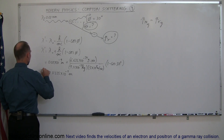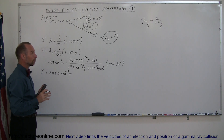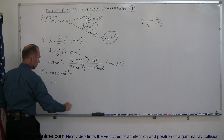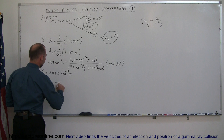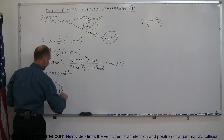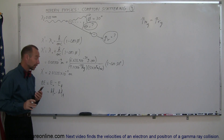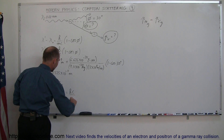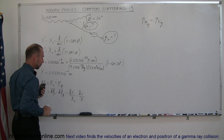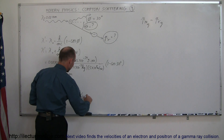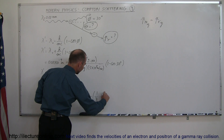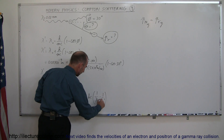So if that's the final wavelength after the collision, now we're going to find the change in energy. The change in energy equals the initial energy minus the final energy — h times frequency initial minus h times frequency final. Of course frequency can be written as c over lambda, so this becomes hc over lambda initial minus hc over lambda final. Factoring out hc, this can be written as h times c times (1 over lambda initial minus 1 over lambda final).